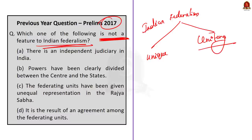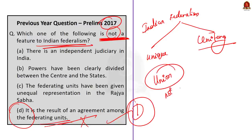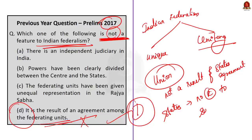As we all know, the Constitution of India establishes a federal system of government but the term 'federation' is nowhere used in the constitution. Article 1 describes India as a 'Union of States,' which implies two things: first, the Indian federation is not the result of an agreement by the states; and second, no state has a right to secede from the federation. Therefore, Option D is the answer. Options A, B, and C are actual features of Indian federalism and are correct.